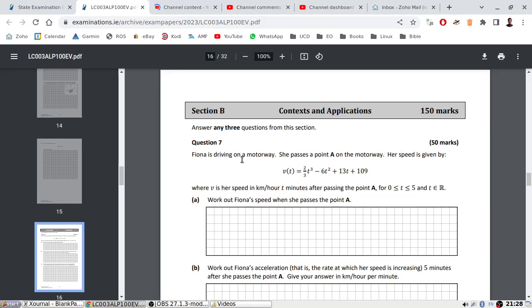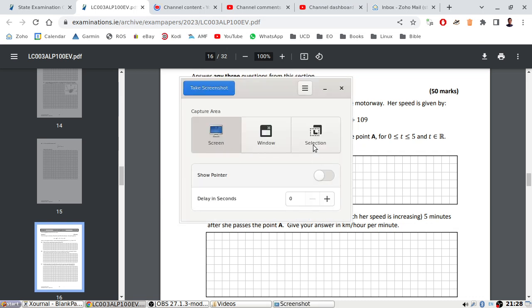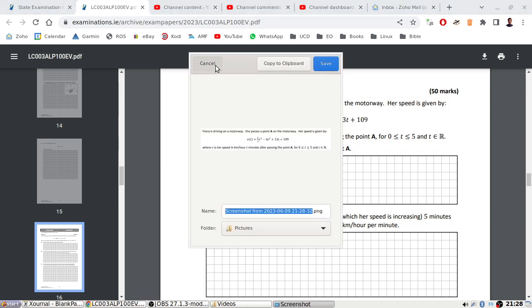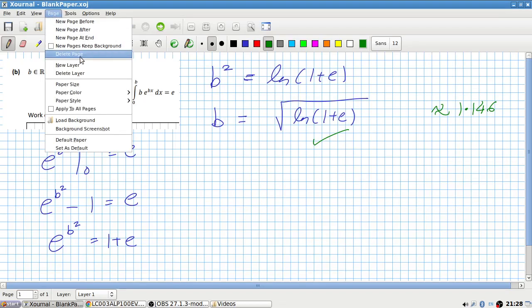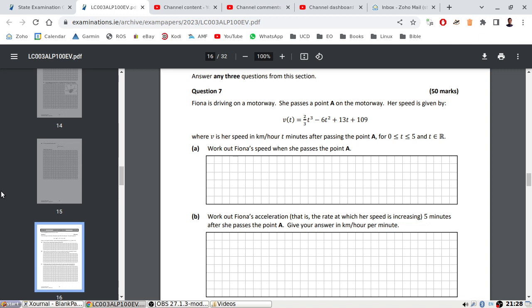What have we got on section B here? Fiona is driving on the motorway. She passes point A on the motorway, her speed is given by that formula where V is her speed in kilometers per hour, T minutes after passing point A. It's only valid for 5 minutes. It's weird because you have to put minutes into the formula, but it gives you the answer in kilometers per hour. I sure hope that doesn't cause problems later for me.